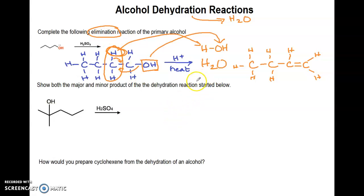Now let's look at one where we have to consider Zaitsev's rule. We didn't have to consider it here because there was only one carbon option for the hydrogen. But if we have essentially anything other than a primary alcohol, we might have to consider Zaitsev's rule. So in this, it says show both the major product and the minor product of the dehydration reaction started below. So if I were taking a test or quiz, one of the first things I do is I would circle, highlight, underline, or just somehow draw my brain's attention to that dehydration because that's going to tell me what I'm working with right away.